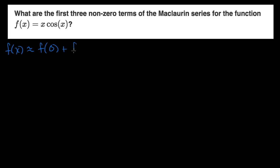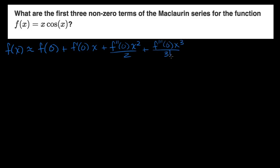The series continues: plus f prime of zero times x, plus the second derivative evaluated at zero times x squared over two, plus the third derivative evaluated at zero times x to the third over three factorial — we could view this as two factorial as well — and we keep going on and on forever.